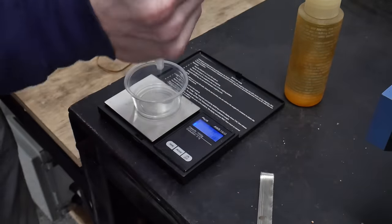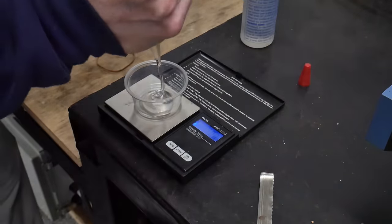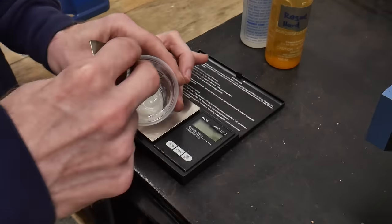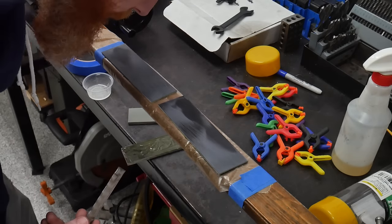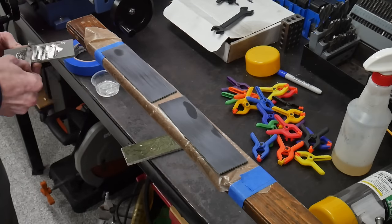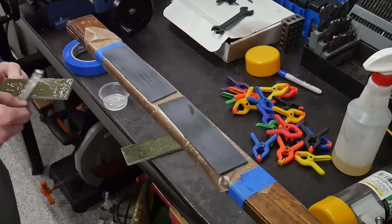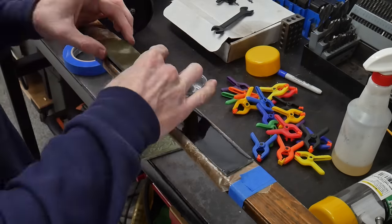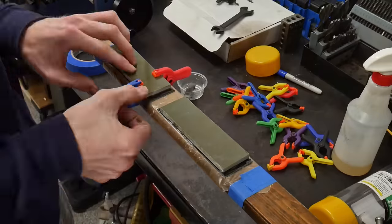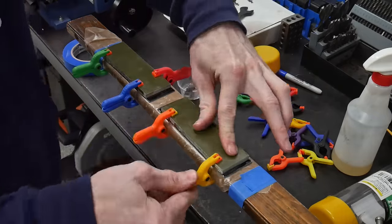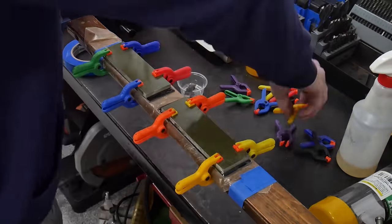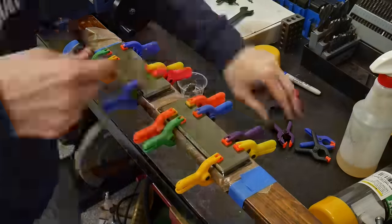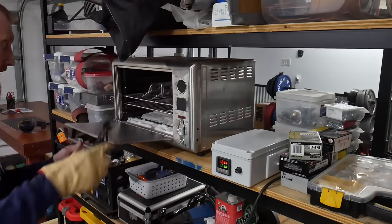While we're tempering the blade, we can get started on the handle. I'll be gluing some fancy liners onto my G10 handle scales just in an effort to class this knife up a little. Before applying the epoxy, I like to make sure the pieces are flat and have been cleaned off with rubbing alcohol. I then clamp them to a board wrapped in parchment paper to let them dry and cure.